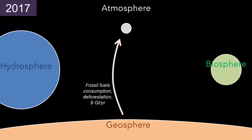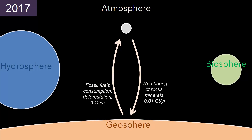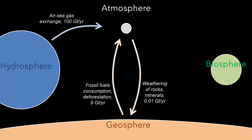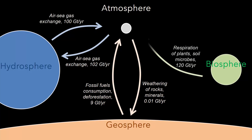However, after the Industrial Revolution, there was a rapid increase in fossil fuel use and significant land use changes. Consequently, today's version of this figure illustrates that we now release approximately 9 gigatons of carbon each year from the geosphere through human activities. Much of the additional carbon is added to the atmosphere, but some of it finds its way to the hydrosphere and is added to the world's ocean as part of the air-sea gas exchange process. Also, the biosphere mops up some of the additional carbon, adding it to plants and soil organisms.